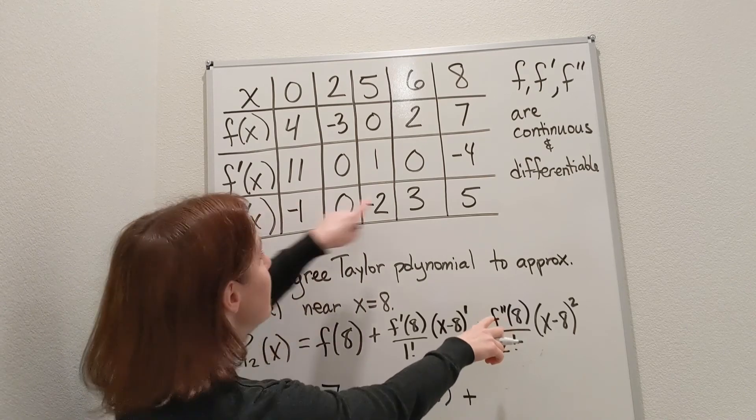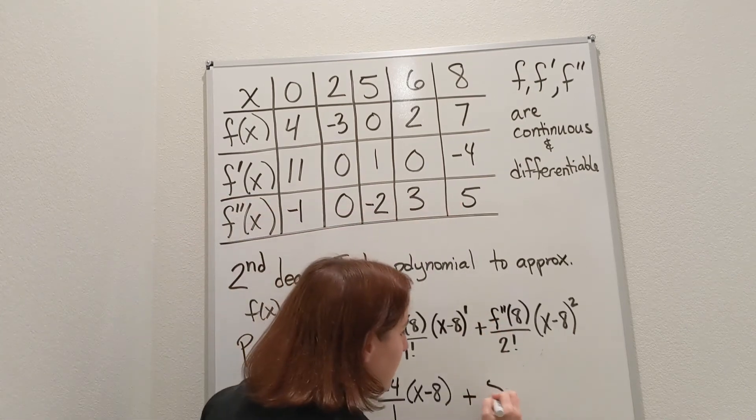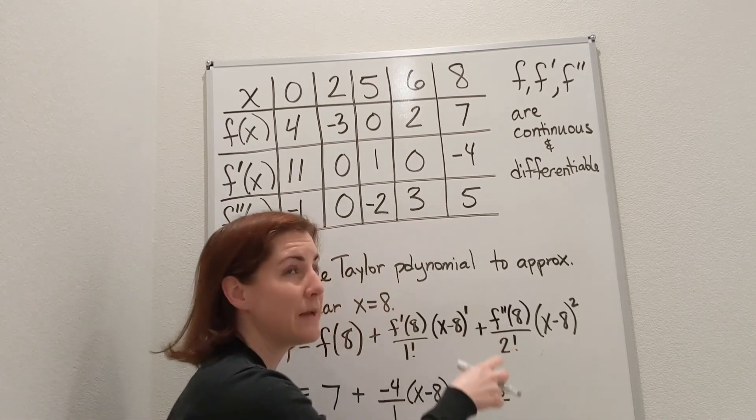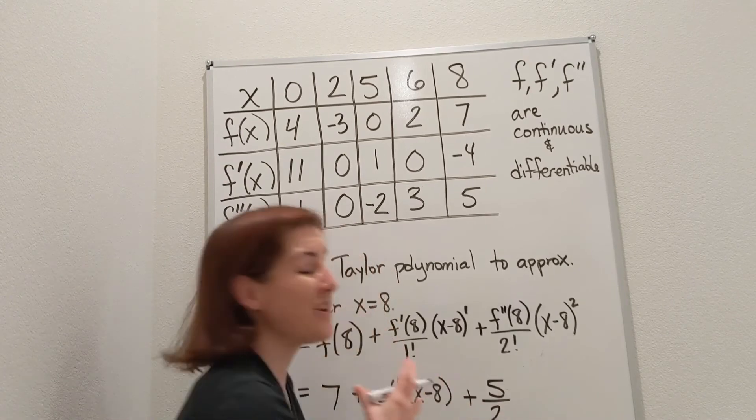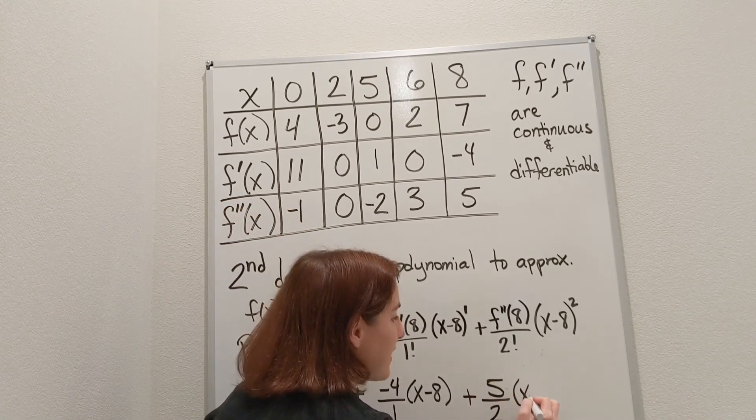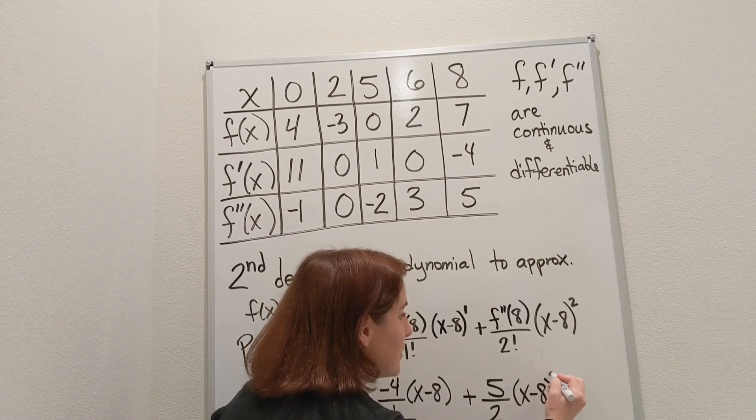And then plus, second derivative at 8 is 5. 2 factorial is 2 times 1, which is 2. Although you're welcome to leave it 2 factorial as well. And then here we have x minus 8 squared.